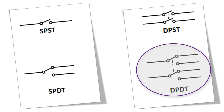A DPDT, or double pole double throw switch, has six terminals. It is simply two SPDT switches. The switch has two input contacts and four output contacts, commonly used as on-on or on-off switches. A good visual example for a DPDT switch is controlling car turning indicators. Activating the switch up would turn on both the front and back indicator in one direction, while activating it down would turn on both in the opposite direction.